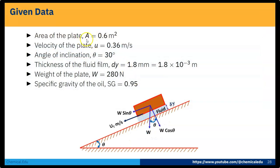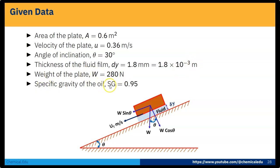Here is the given data. Area of the plate: A = 0.6 m². Velocity of the plate moving downward: U = 0.36 m per second. Angle of inclination: θ = 30 degrees. Thickness of the fluid film: dy = 1.8 mm, which converts to 1.8 × 10⁻³ m. Weight of the plate: W = 280 N. Specific gravity of the oil: SG = 0.95.